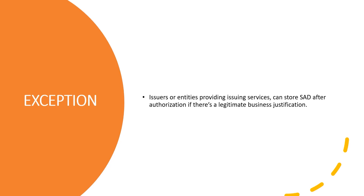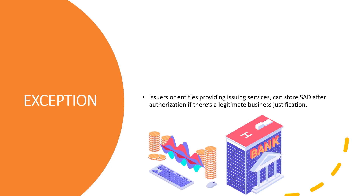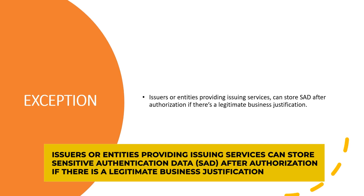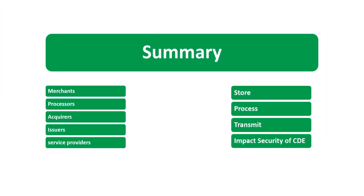Remember, sensitive authentication data cannot be stored after authorization. But there is one exception to that rule — listen carefully: issuers or entities providing issuing services can store sensitive authentication data after authorization if there is a legitimate business justification. Write this down and memorize it because it is very important. Issuers or entities providing issuing services can store sensitive authentication data (SAD) after authorization if there is a legitimate business justification.